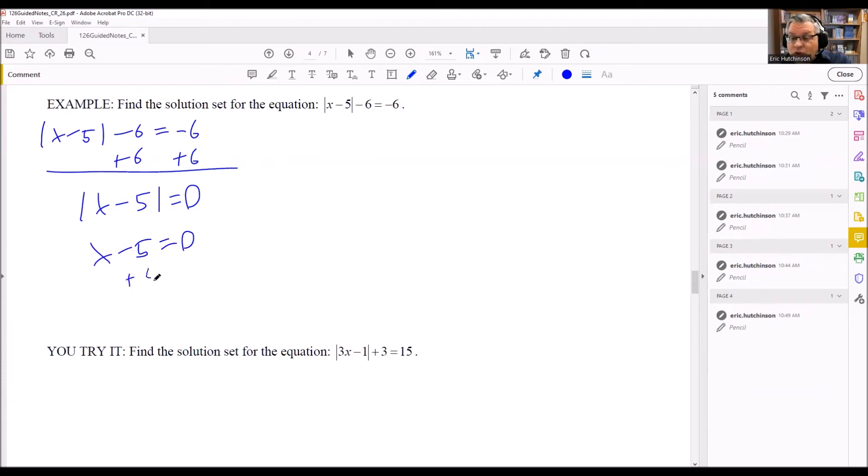So this, I add 5 to both sides, and we get x is equal to 5. And so that's going to be the only solution that we have. You can't do x minus 5 equals 0 and then negative 0. Negative 0 is just 0. So you'll get the same result. So we only have one solution whenever you have an absolute value that's equal to 0.